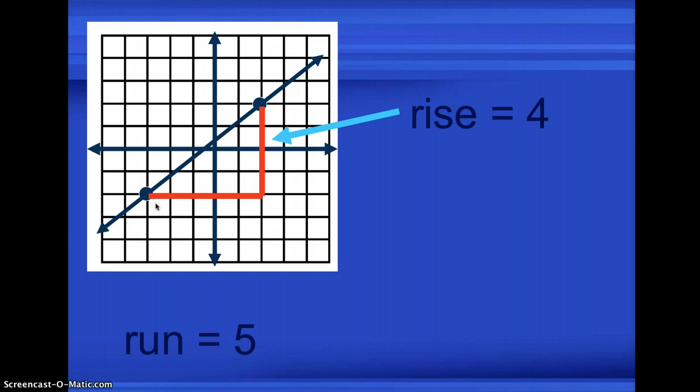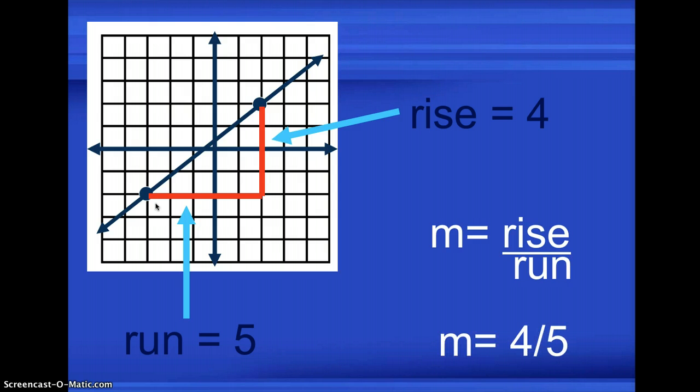So you have 5 units for run and so for slope, we do slope or gradient is equal to rise over run. So the gradient is 4 over 5. It's always vertical over horizontal.